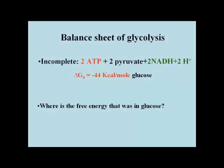Here's a balance sheet for glycolysis of a mole of glucose to 2 moles of pyruvate. We have consumed 2 molecules of ATP, but we synthesized 4. That's a net of 2 ATPs produced.